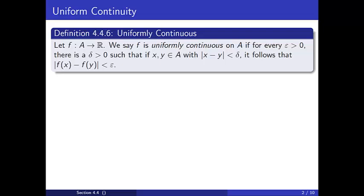Uniform continuity is stronger than our earlier notion of continuity at a point and applies to subsets of the real numbers rather than to single domain points. Let f be a function from A to R where A is a subset of real numbers. We say f is uniformly continuous on A if for every positive epsilon there is a positive delta such that if x and y are in A and x and y are not more than delta units apart, then f(x) and f(y) are not more than epsilon units apart. First observe that this definition does look like our epsilon-delta definition of continuity at a point, which we discussed in theorem 4.2.8.